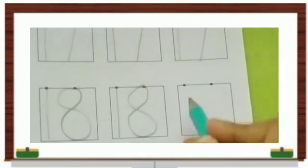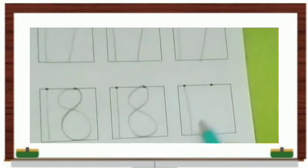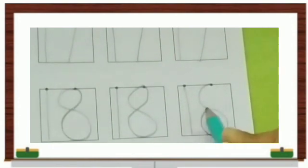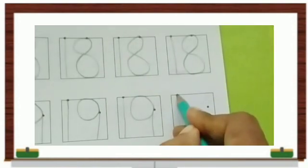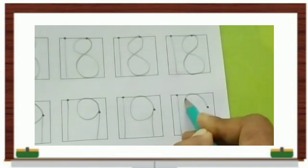After 17 comes number 18, right? 1, 8, 8, 18, 18. Next number is, after 18 is number 19.